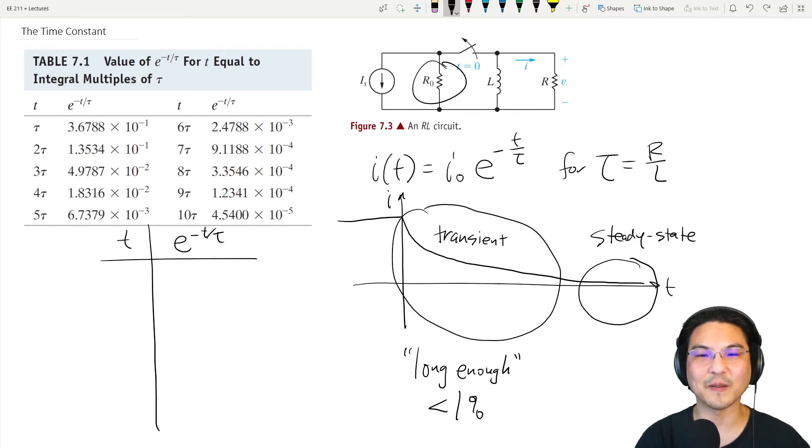We want e to the minus t over tau to be less than one percent. If you wait one time constant, e to the minus t over tau, if t is one time constant, that means e to the minus one. Punch that in the calculator, you get 36.78 percent.